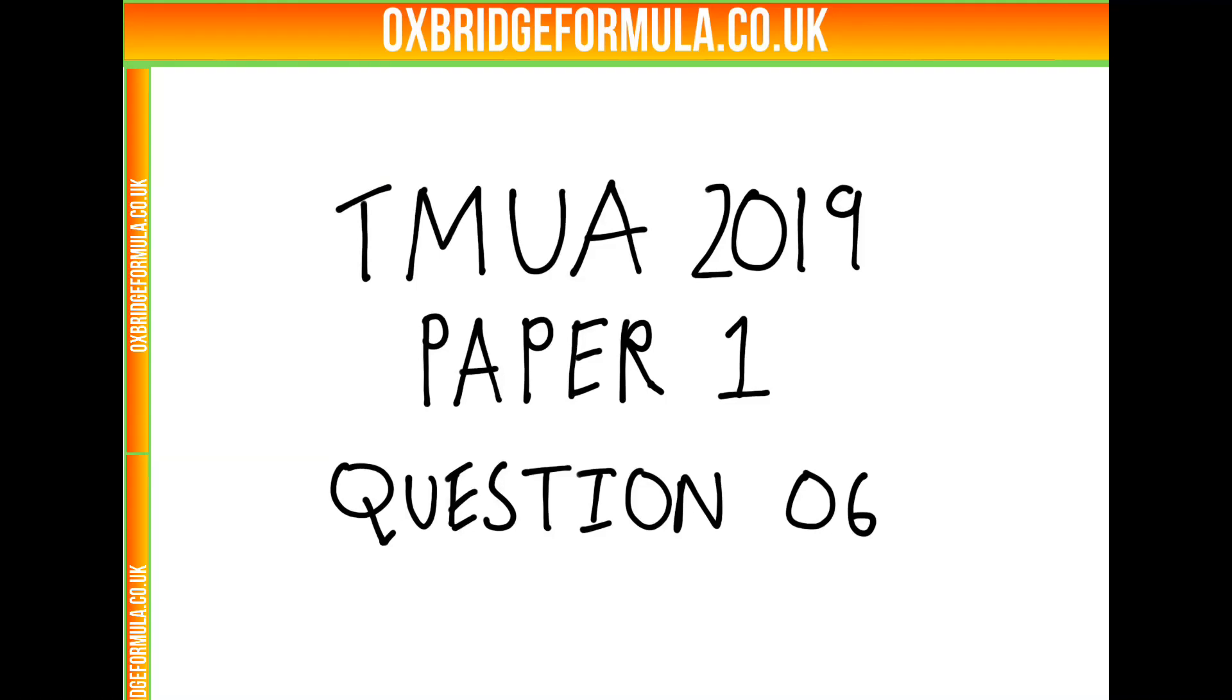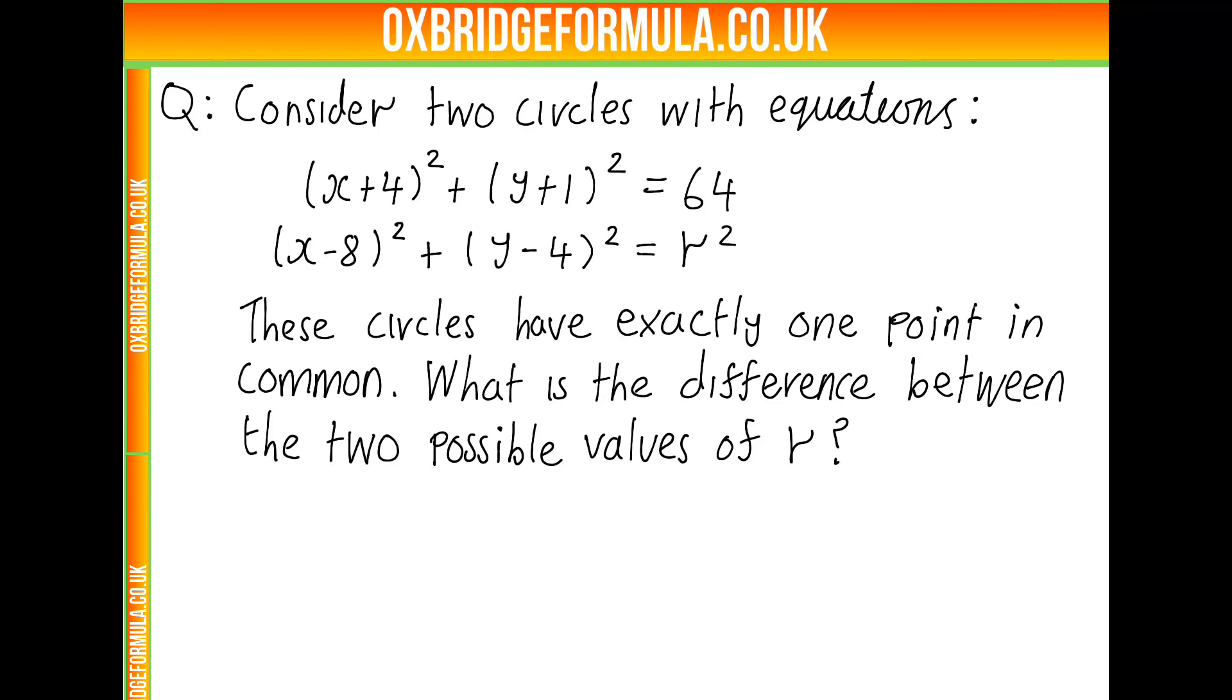This is the solution video for question 6 from paper 1 of the 2019 TMUA exam. This question asks us to consider two circles with equations x plus 4 squared plus y plus 1 squared is 64, and x minus 8 squared plus y minus 4 squared is r squared, where r is some unknown positive number. Then we're told that these circles have exactly one point in common, and we're asked what's the difference between the two possible values of r that we could choose to make this statement true about the circles having exactly one point in common.